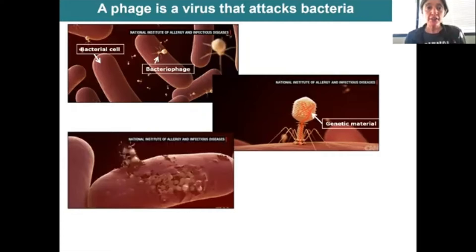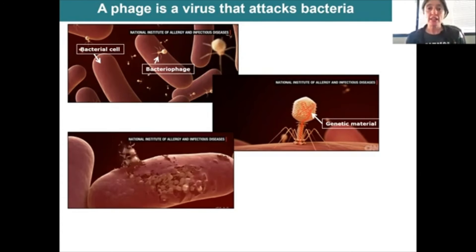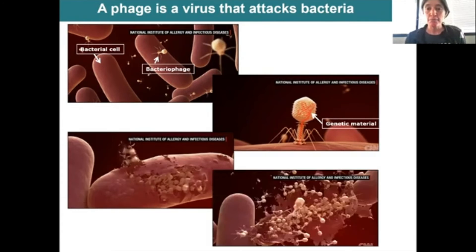So that bacterial cell — that bacteria — is now a phage factory. All it can do is make more and more phage based on that genetic material until it bursts. There are so many phage, and now that bacteria has been killed.